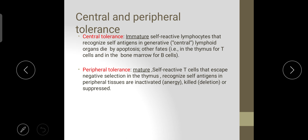There are two types of tolerance: central and peripheral. In central tolerance, there are immature self-reactive lymphocytes. In peripheral tolerance, there is a mature self-reactive T-cell response.